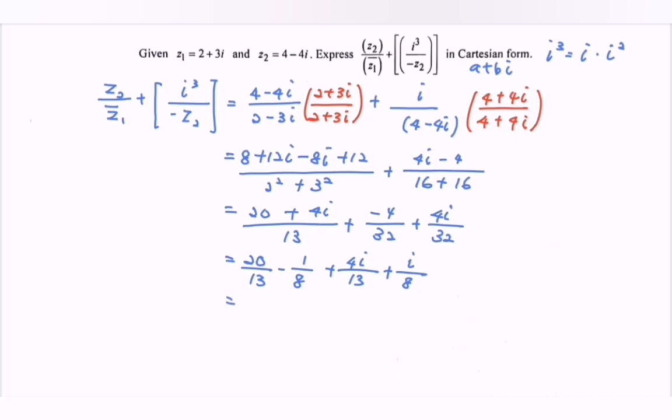Equate the denominator. It means that we have 160 - 13 over 104 plus 32 + 13 over 104i.